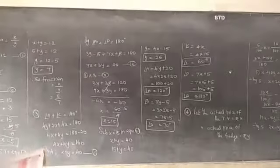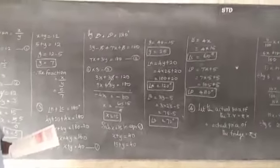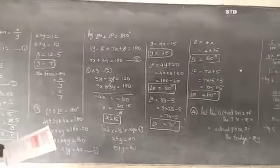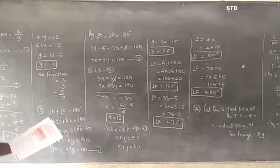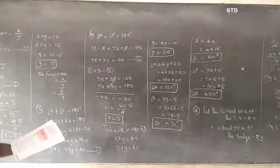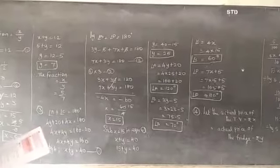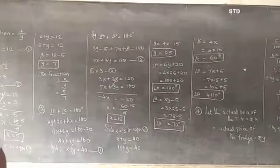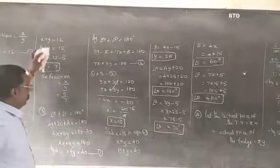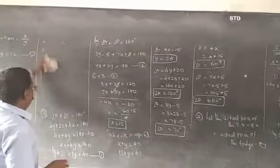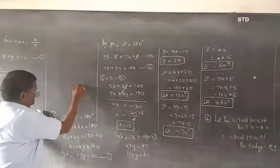So, in your book, exercise number 3.40, question number 3. ABCD is a cyclic quadrilateral. What is called a cyclic quadrilateral? It means this one.